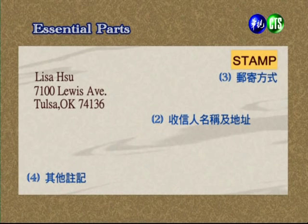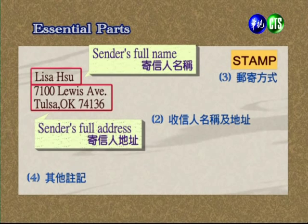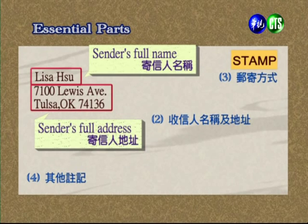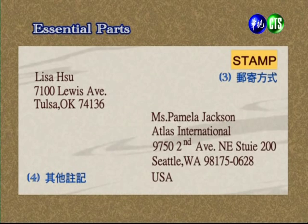Now let's look at the first part of a business letter — the envelope. There are specific requirements. On the upper right is the stamp area. The upper left shows the sender's name and address. The lower right (about one quarter of the envelope) shows the recipient's name and address. The lower left is for other notations, which are optional. Let's look at how to write the sender's address in detail — for example, Lisa Hsu. In Western format, you write house number first, then street name, then city, then ZIP code and state abbreviation.